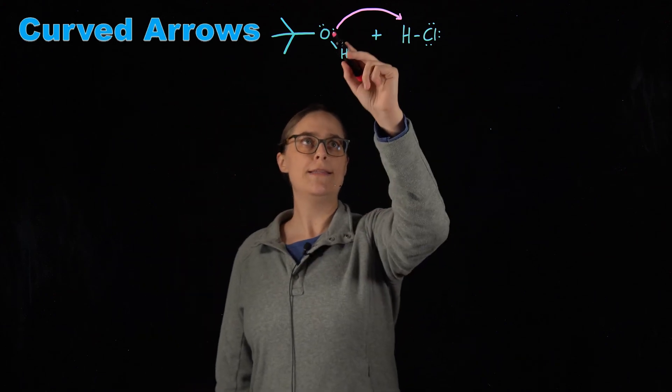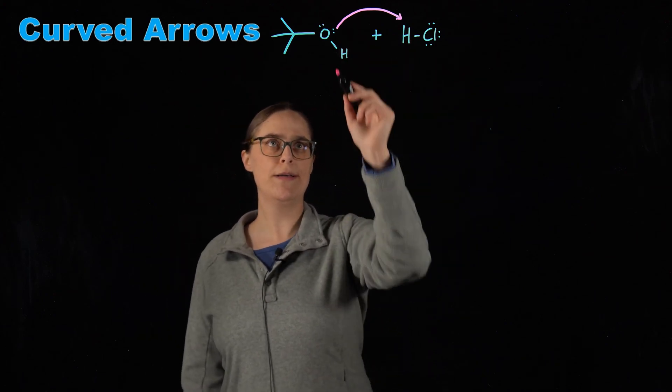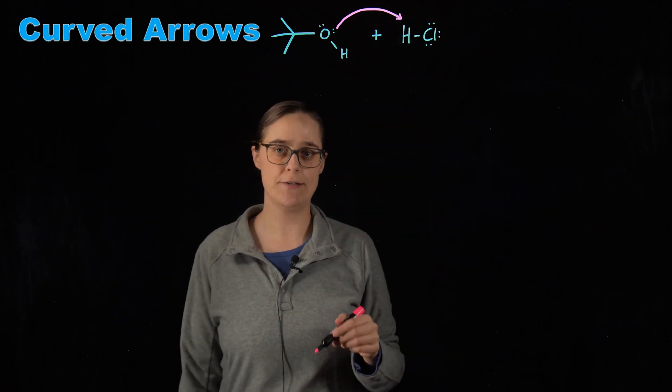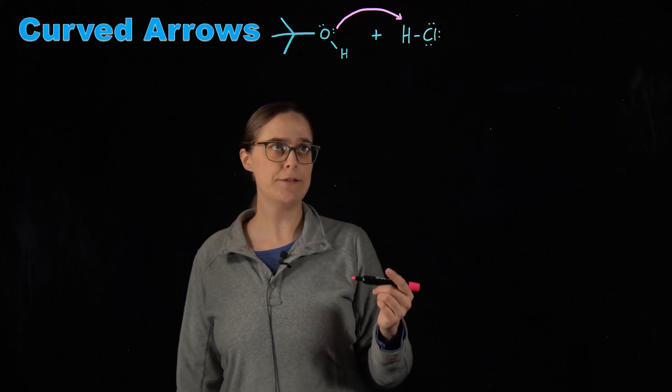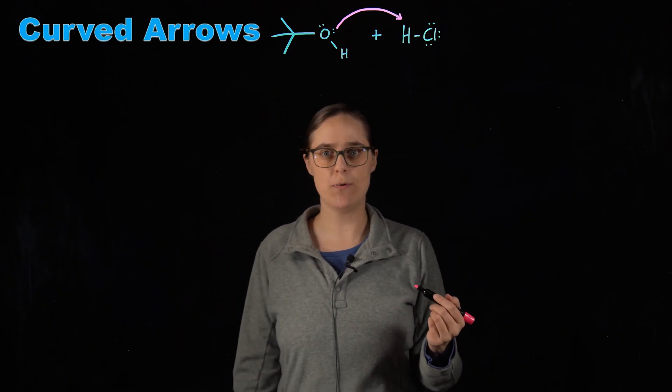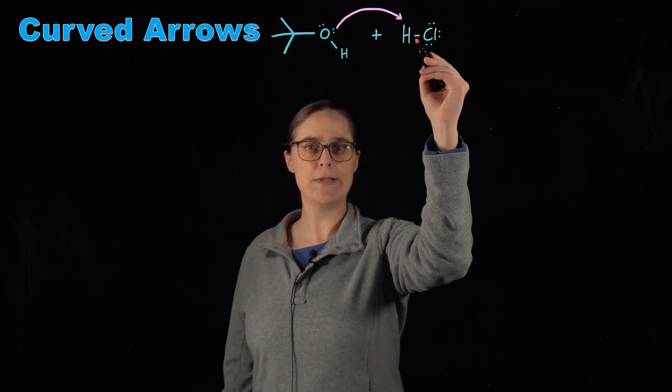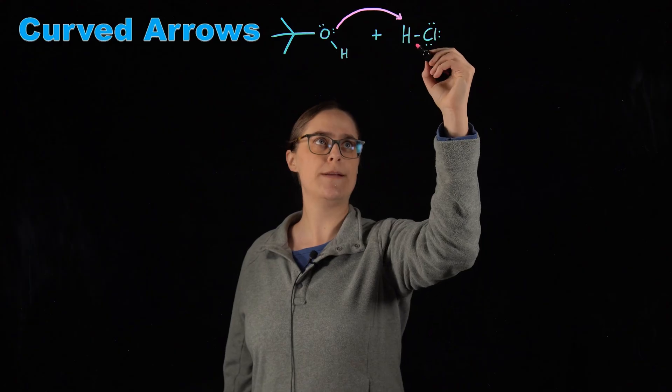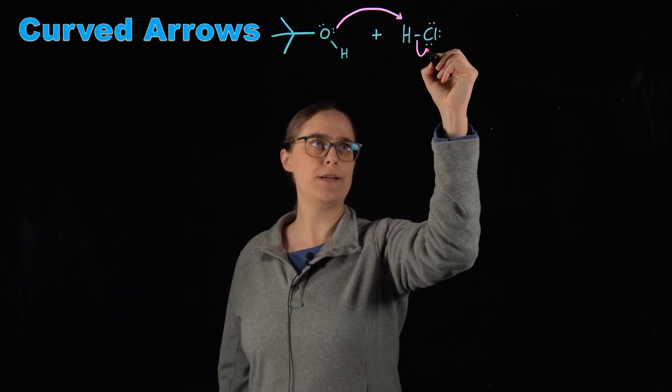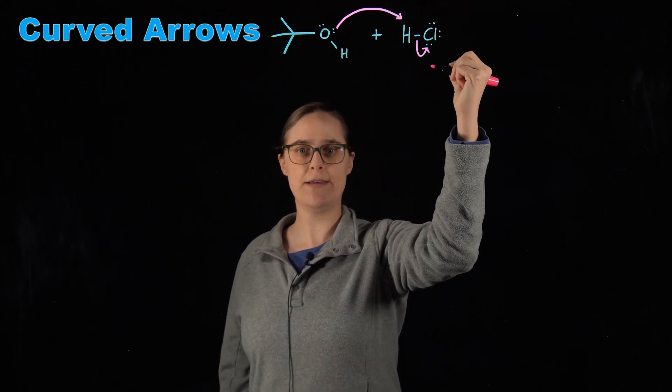Now this would form a new bond between this oxygen and this hydrogen. That's a problem for the hydrogen because hydrogen can only make one bond at a time. So it is going to give up these two electrons that it's sharing with chlorine. Chlorine is more electronegative than hydrogen. So it's going to take those two electrons.